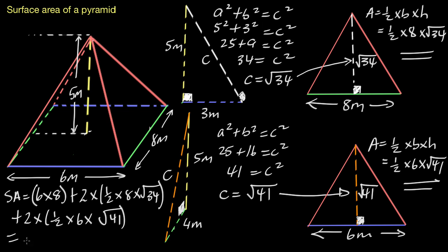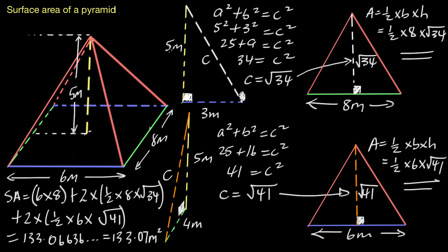Finally, we push the equals button and do that whole calculation in one go on the calculator. What you'll get is 133.06636... Rounded to two decimal places, that gives you 133.07 meters squared. So that is the total surface area for this pyramid.